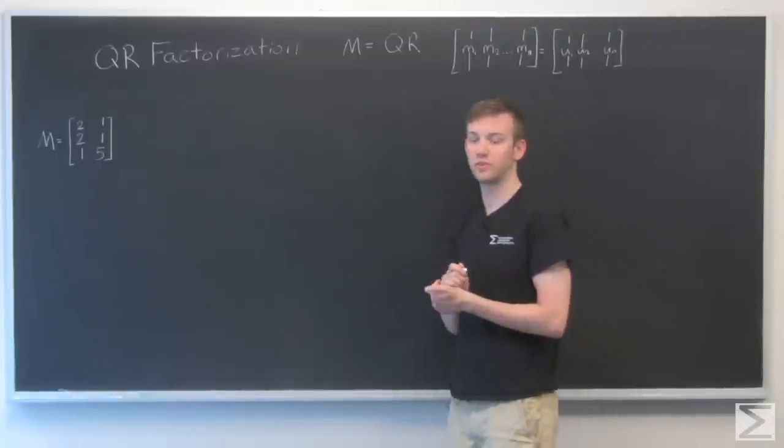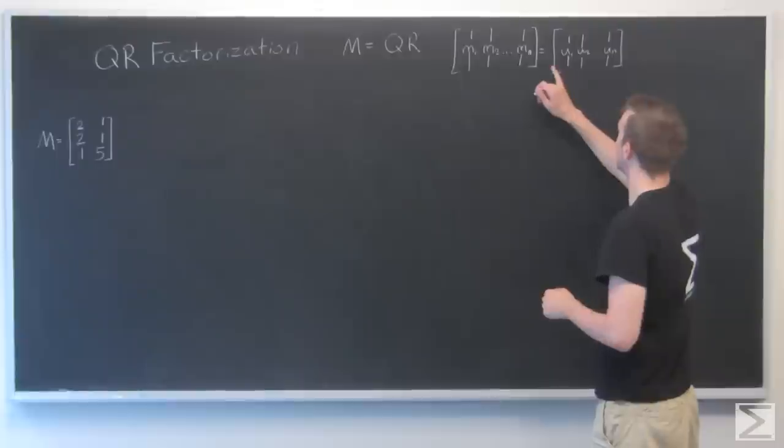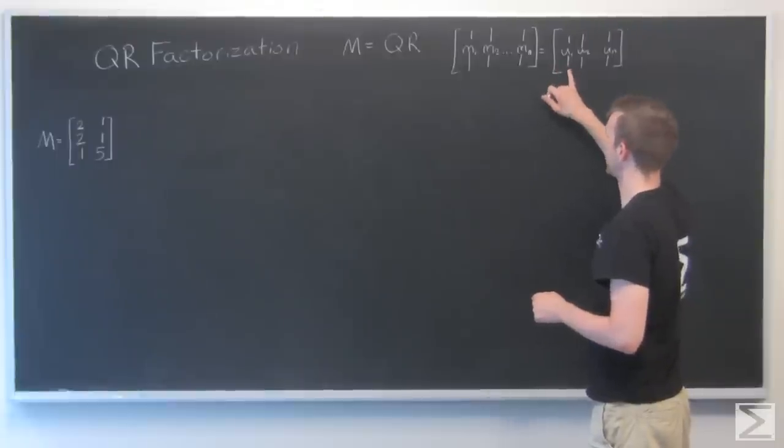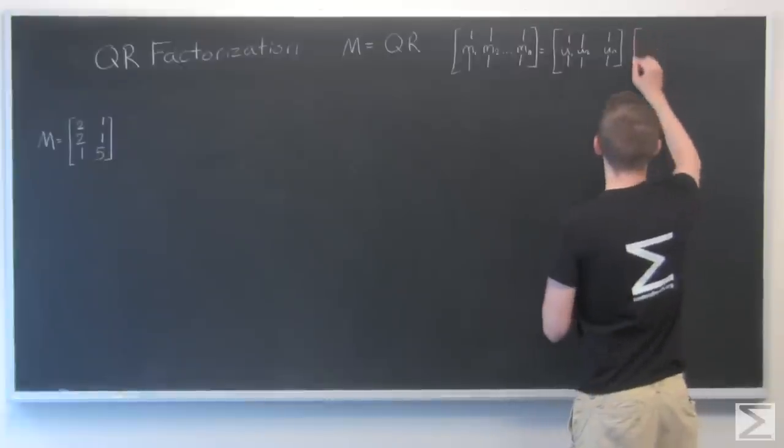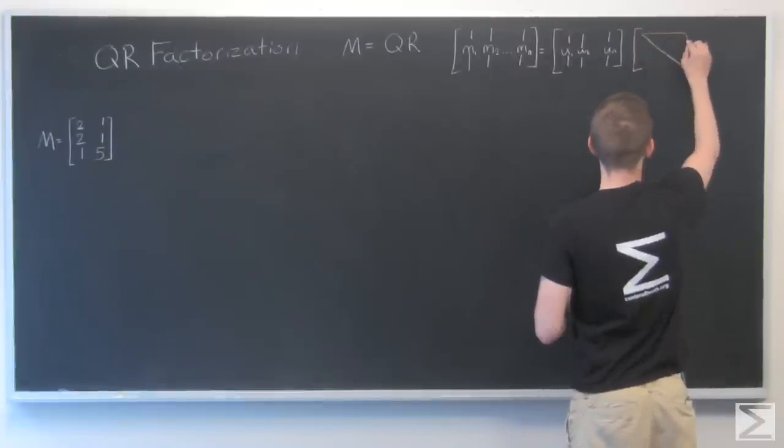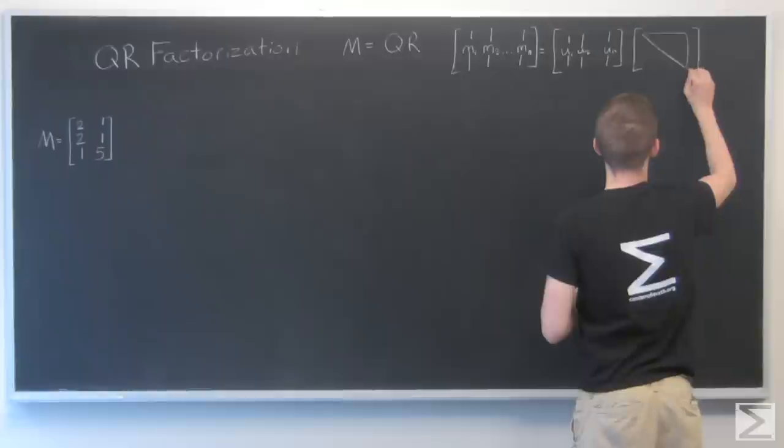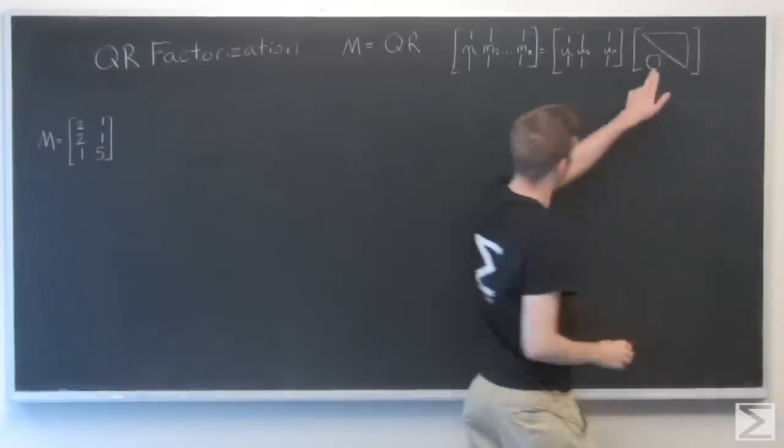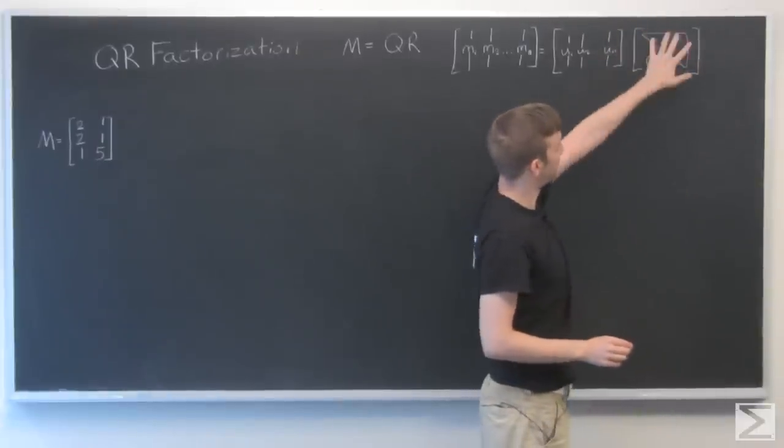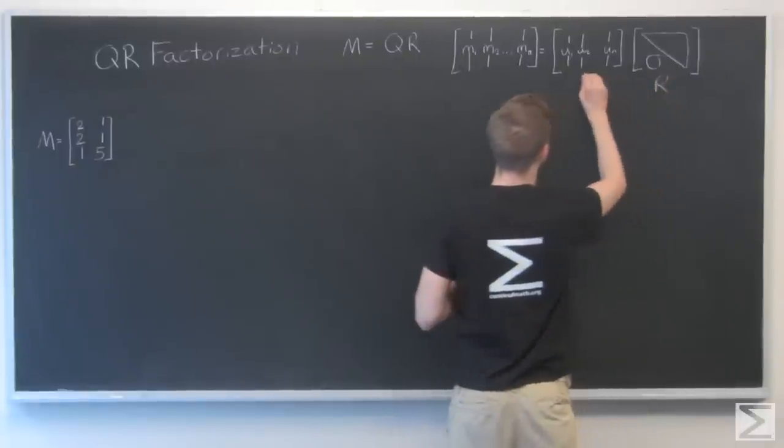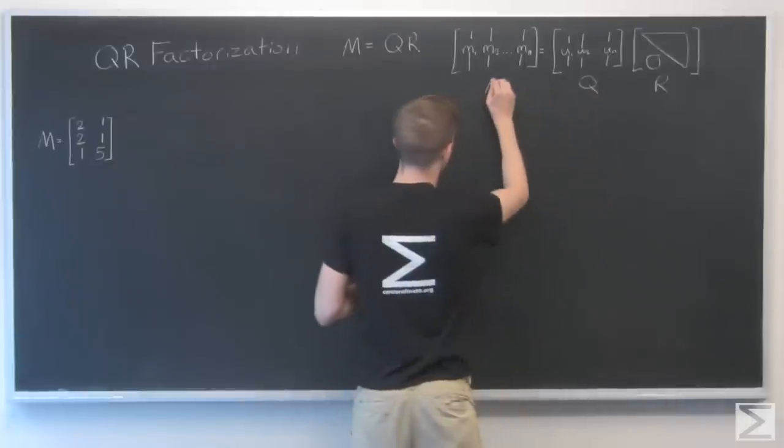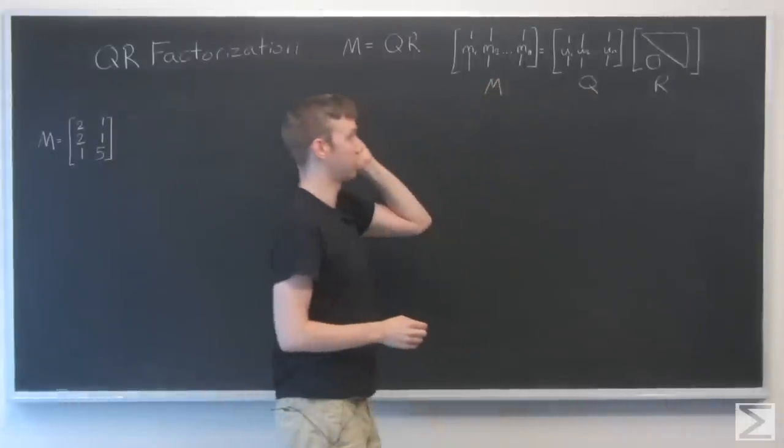Check the previous video for the Gram-Schmidt process on how exactly we calculate this from these, but we're going to do it in this video anyway. And finally, our R is some kind of upward triangular matrix that looks like that. So all zeros down here, and then on the diagonal and above, various numbers. That's R, that's Q, that's M, and that's our reference.